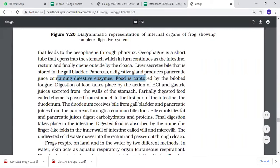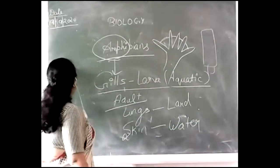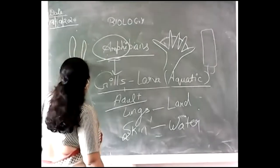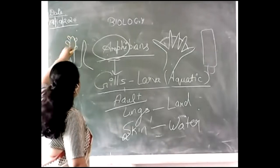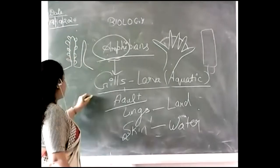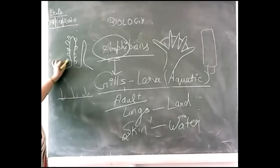Bile juice from the gallbladder digests fat, and pancreatic juice digests carbohydrates and proteins. Final digestion occurs in the intestine. Digestion of food is absorbed through the villi and microvilli in the intestine, just as in humans. The role of villi and microvilli is to increase the surface area of absorption.